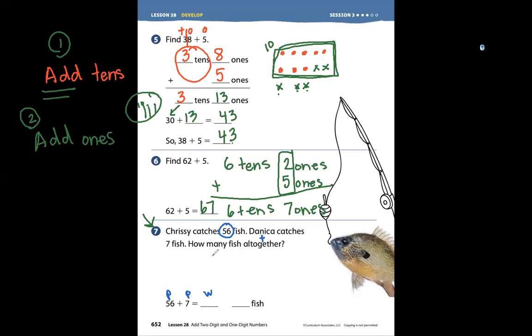So if we are adding 56 plus 7, we could say that we are adding 1 ten, 2 tens, 3 tens, 4 tens, 5 tens, plus 6 ones. And add 7 more ones. 1, 2, 3, 4, 5, 6, 7 ones.